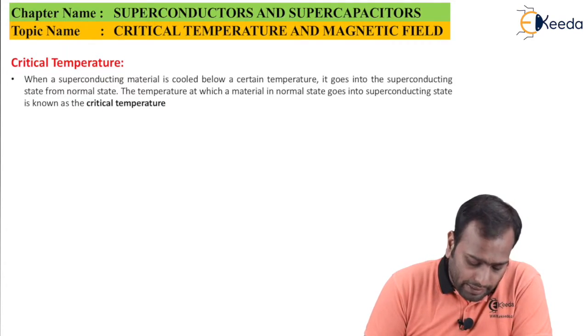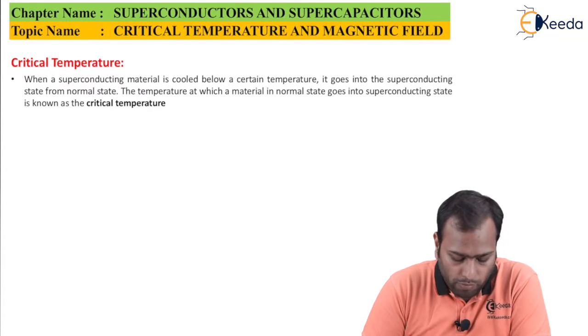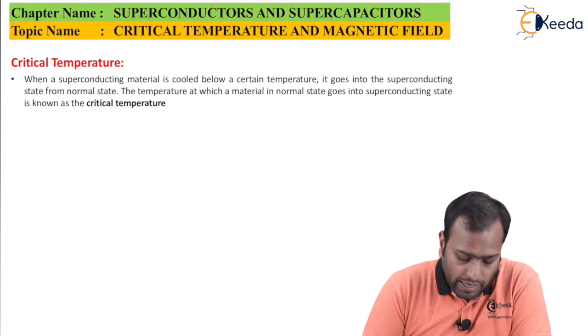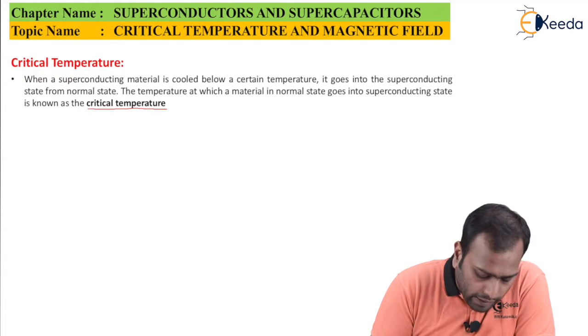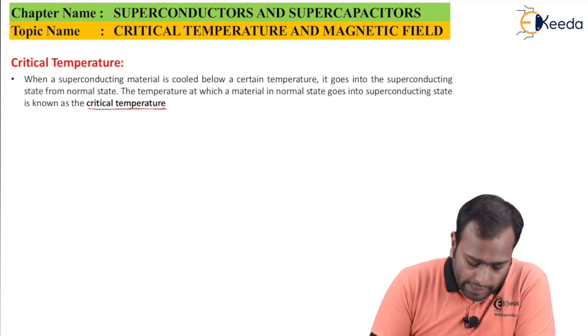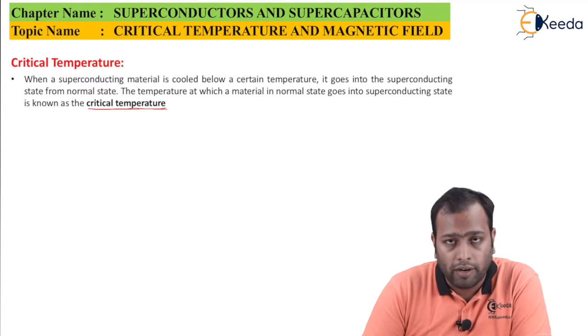When a superconducting material is cooled below a certain temperature, it goes into the superconducting state from the normal state. The temperature at which the material in the normal state goes into the superconducting state is known as the critical temperature. As we studied in the previous class, critical temperature can also be called as transition temperature.